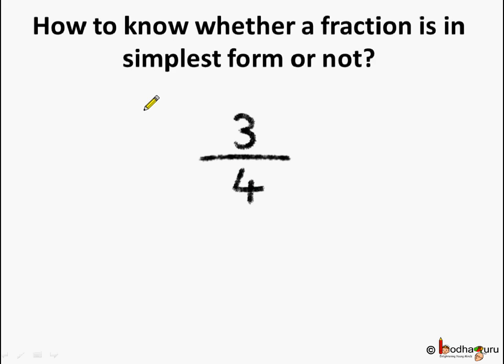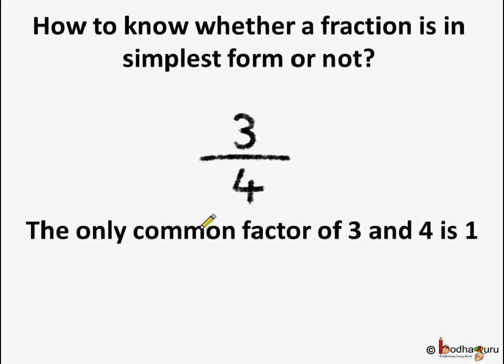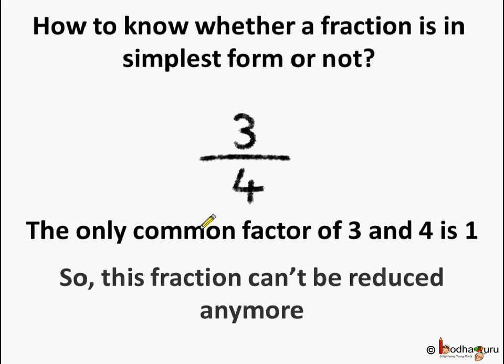Now, the question is, how do we know if the fraction is in its simplest form or not? Let's find out what are the common factors of 3 and 4. The common factor of 3 and 4 is only 1. So, what do we understand? If the numerator and denominator have only one common factor, which is 1, then the fraction cannot be reduced further.